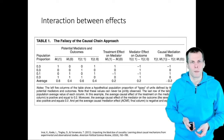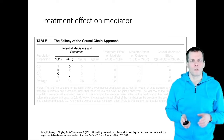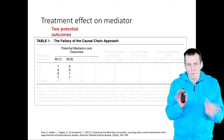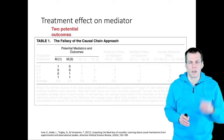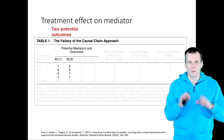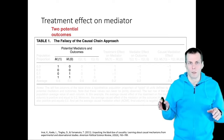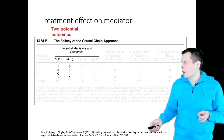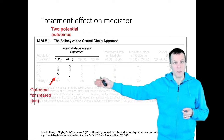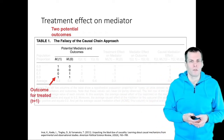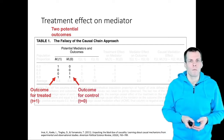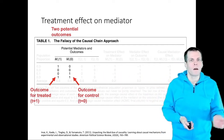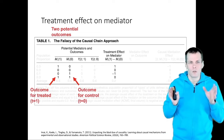Let's look at this table piece by piece. We have two potential outcomes — this builds on the counterfactual model for causality. We can assign an individual to treatment or control, but not both, so there are two potential outcomes of which only one is realized. The causal effect is the difference between these two outcomes. For some individuals the mediator is positive, for some it's zero, both under treatment and under control.